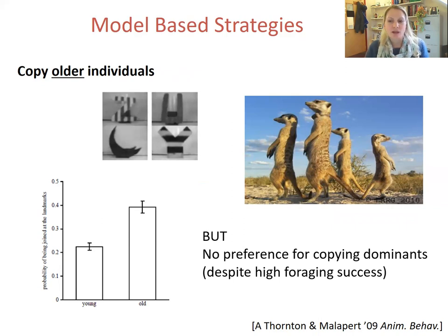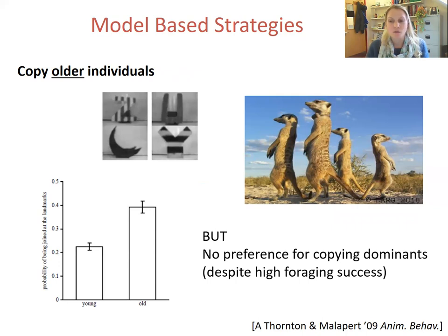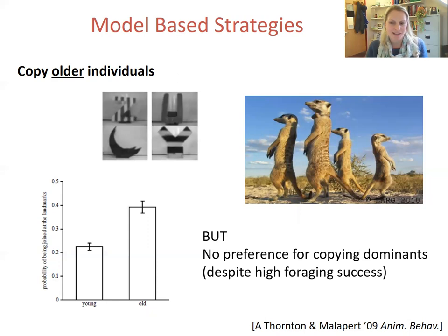However, there was no preference for joining dominant individuals over subordinate individuals, even though dominant individuals actually have higher foraging success in general. This highlights how we must consider the social context within which individuals are socially learning. Even though a copy-dominance model-based strategy would seem useful in meerkats, in this context individuals were probably inhibited from displaying that strategy because it would require them to join dominant individuals at foraging patches, incurring a high risk of being attacked due to food competition.